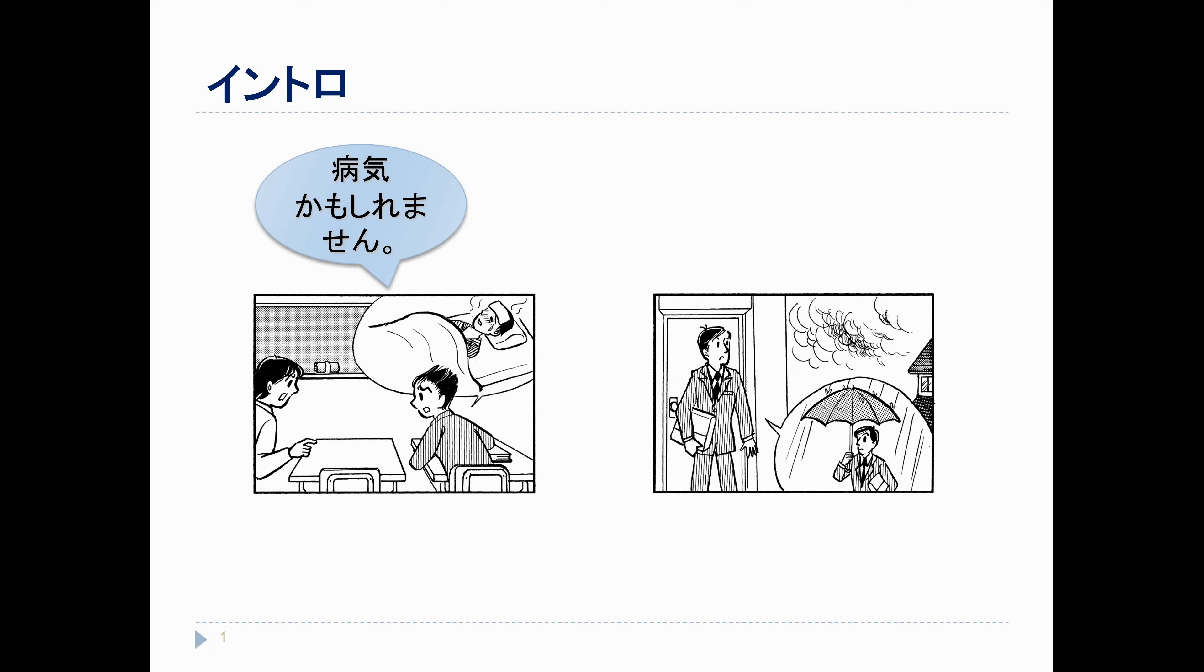Or, I step outside from my house. I take a look, and it's getting really cloudy out. There's a lot of dark clouds gathering. So, I might think, あめがふるかもしれません. So, he might be sick. It might rain.